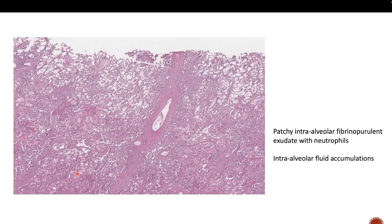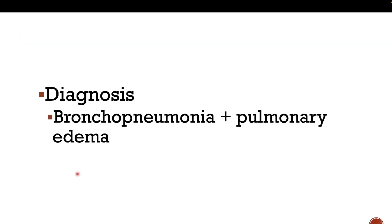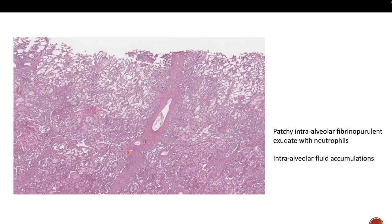You can see acute fluid accumulation due to degradation of bacterial products. This is classic histology of bronchopneumonia with pulmonary edema — we call it bronchopneumonia because not all alveolar spaces are infiltrated, and we say pulmonary edema because of the intra-alveolar fluid accumulation visible in the slides.